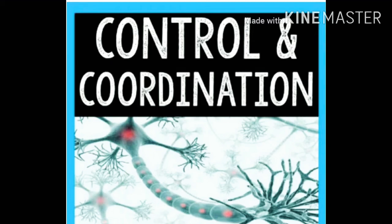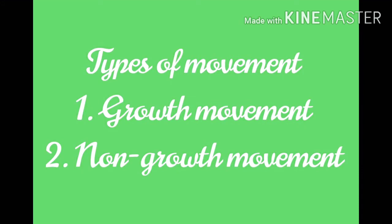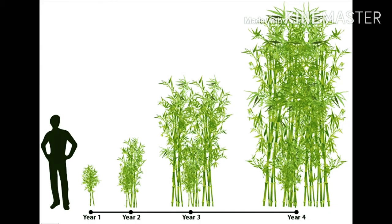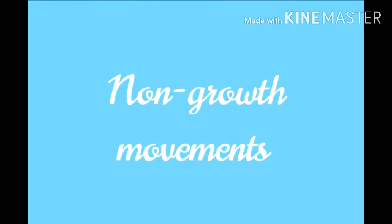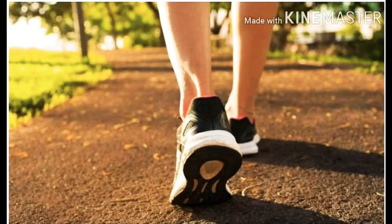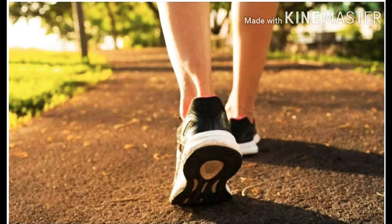First of all, movement. Movement can be of two types: growth movement and non-growth movement. Growth movements are all movements which include an increase in size — like increase in height, width, or weight. Non-growth movements are movements which do not include any type of growth, like running and walking.